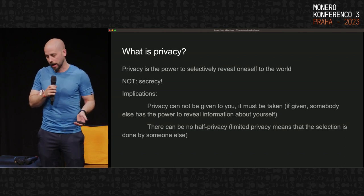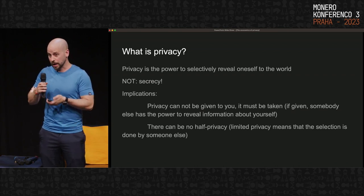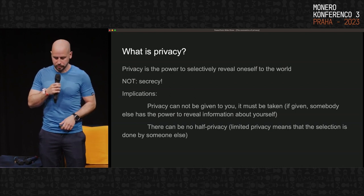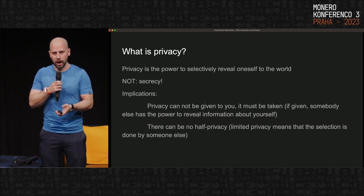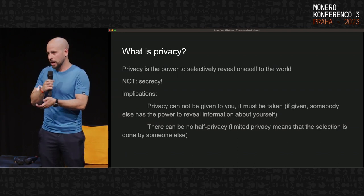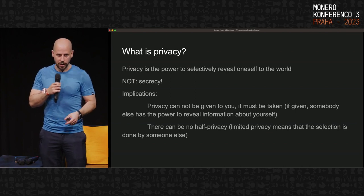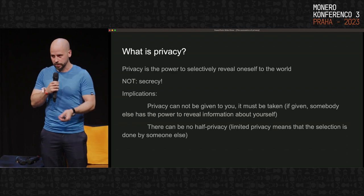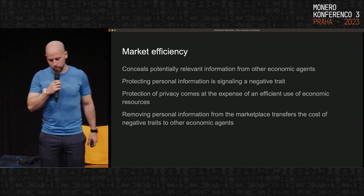The implications of this privacy definition are: first, privacy cannot be given to you by any institution — it must be taken, because if it is given, then somebody else has the power to reveal information about you. The second implication is that there can be no half-privacy, because if privacy is limited in any way, the primary selection is done by somebody else who then has the power to selectively reveal information about you.